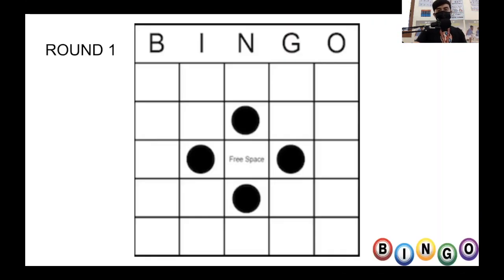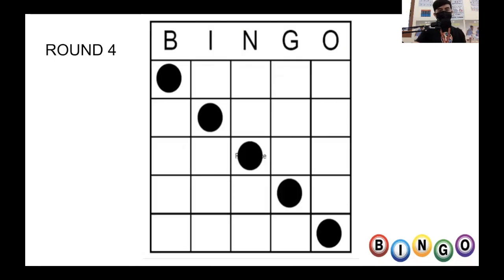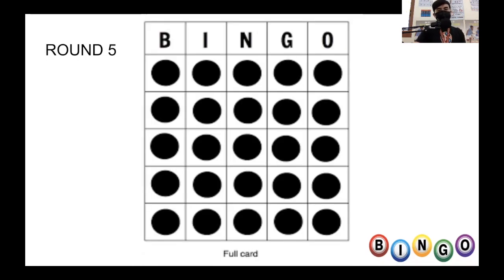For round number one, the pattern is shown on screen — for example, a flower pattern. Whoever first completes that pattern wins the game. It's important that children know their target pattern for each round. I've made five rounds here, but you can increase the number of rounds depending on your class size.